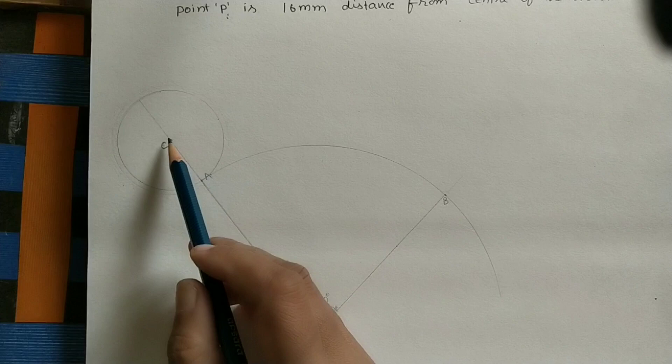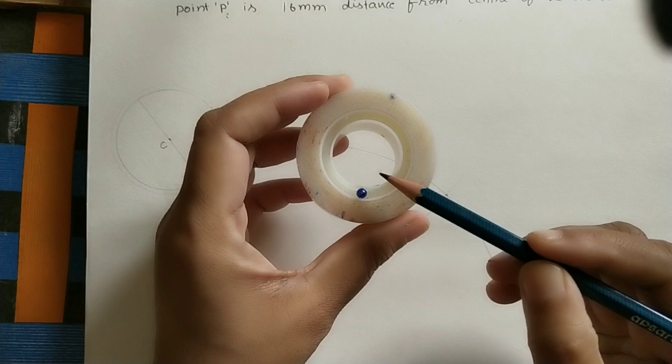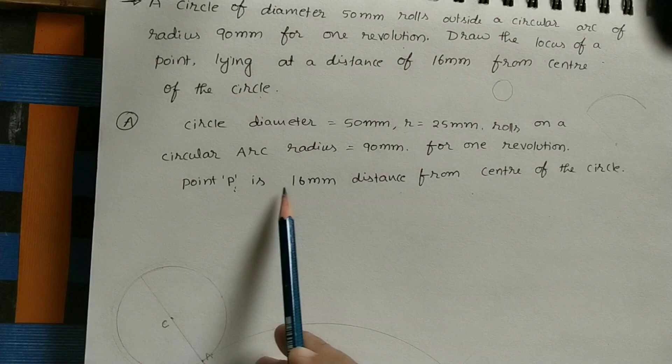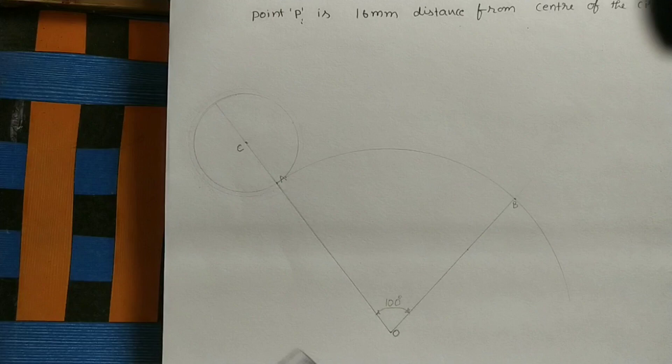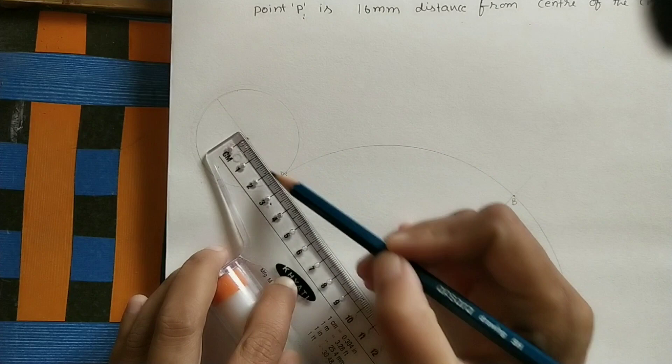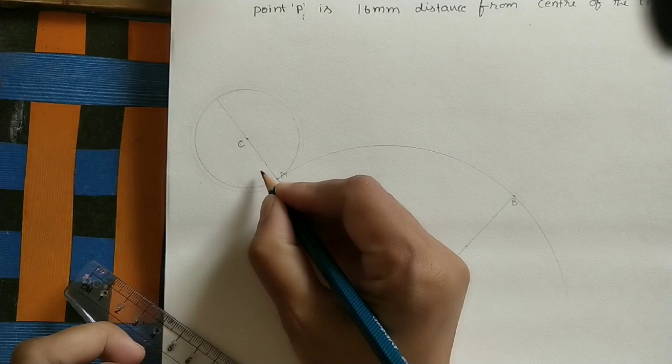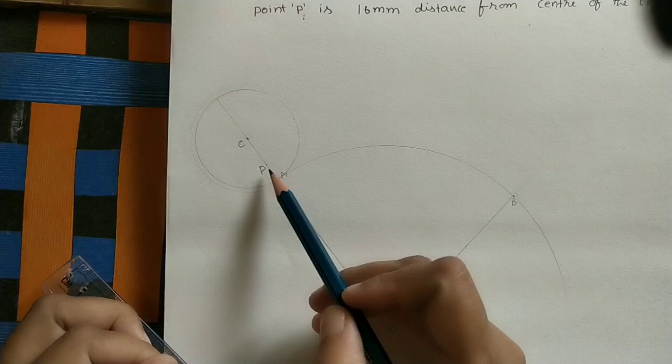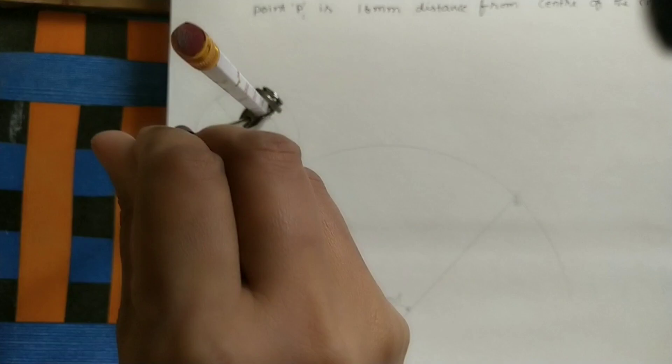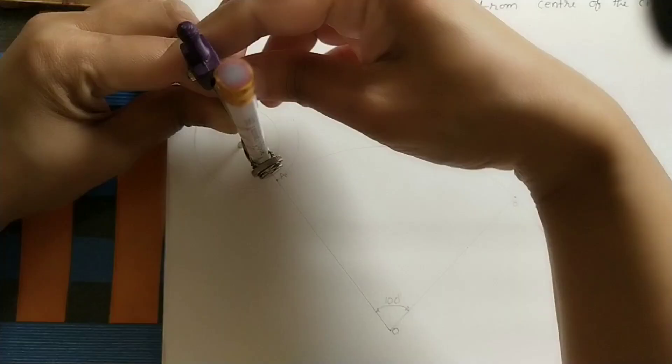P point capital P is 16 mm distance from the center of the circle. By using scale, from this center take 16 mm — better to mark it on the diameter. This is 15, next 16. This is the initial P point. Take CP length, that is 16 mm or 1.6 cm, and using compass make one more circle of radius CP.